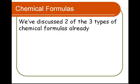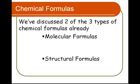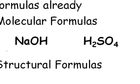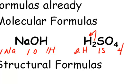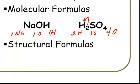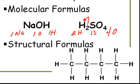So far, we've discussed two of our three types of chemical formulas already. We've talked about molecular formulas — things like NaOH and H₂SO₄ — that tell us what's there and how many of them. Like in NaOH, we have one sodium, one oxygen, and one hydrogen. Whereas in H₂SO₄, we have two hydrogens, one sulfur, and four oxygens. We've dealt a little bit with structural formulas, like telling you that we have four carbons bonded in a row and those four carbons are bonded to hydrogens — so we see not only what's there, but what's bonded to what.